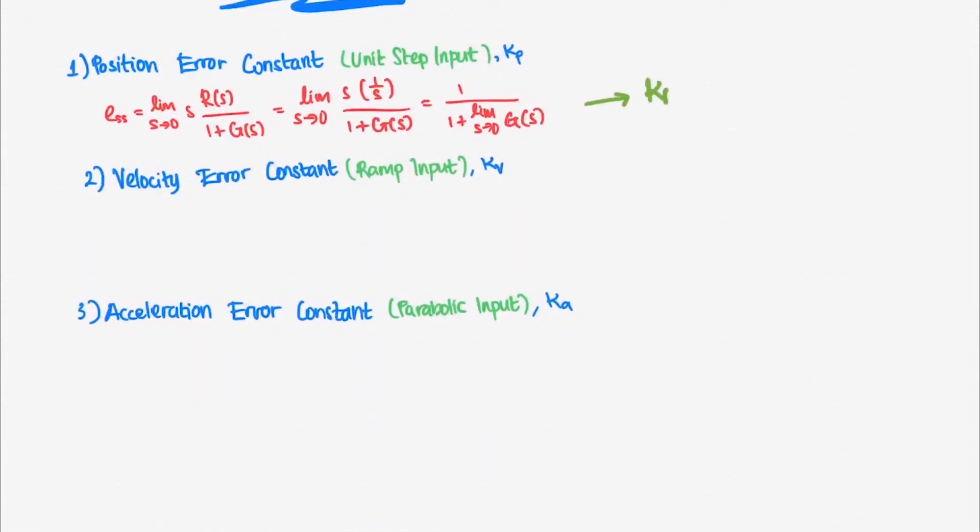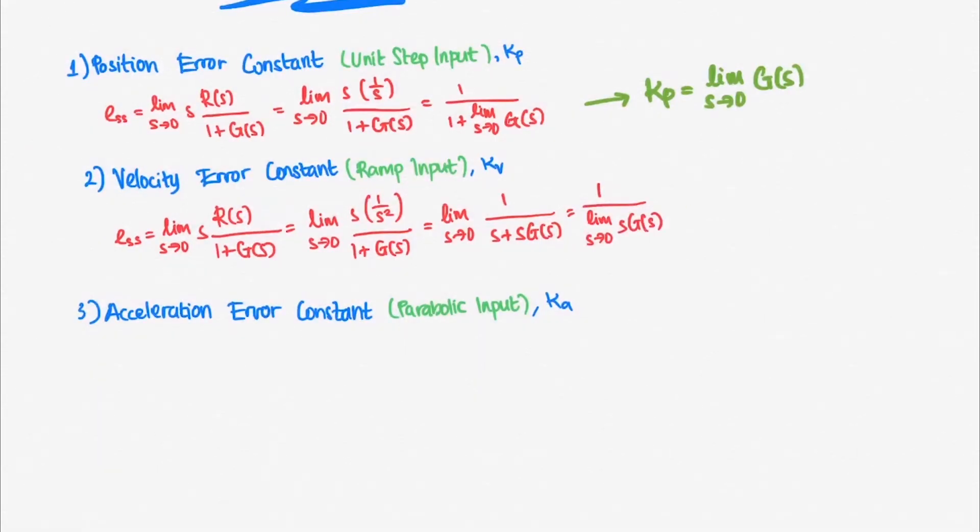If we plug in a unit step input, that is R of s is equal to 1 over s, into our steady-state error formula, we get this equation. Position error constant Kp is limit towards 0 of s G of s.